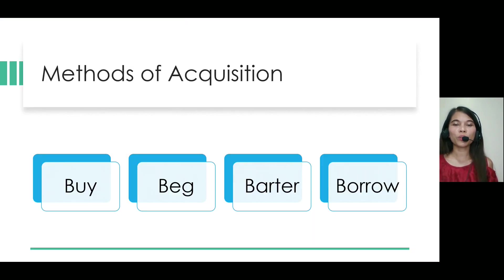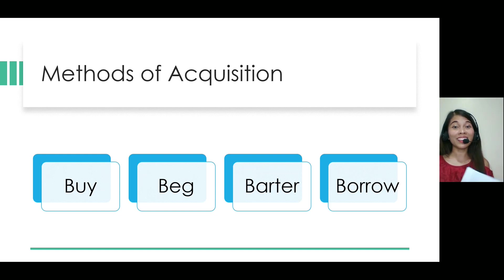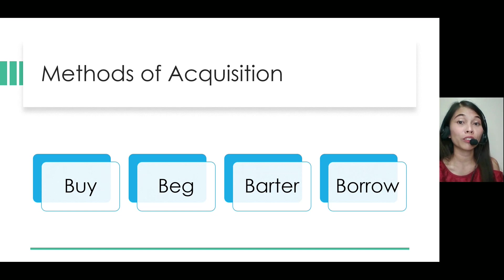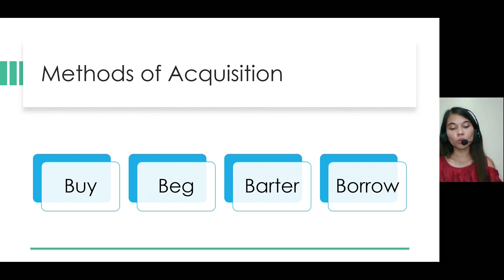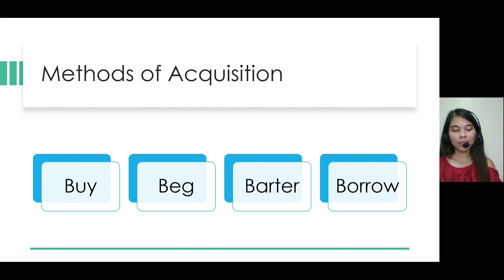Besides methods of ordering, we also have methods of acquisition: buy, beg, barter, or borrow. "Buy" means we purchase. "Beg" means we request that materials be given to us. "Barter" is like an exchange. "Beg" or gifts refers to materials given to the library from various local and foreign sources — individuals, institutions, foundations, friends of the library, alumni, and many more. Selection and acceptance criteria for gifts should be the same as those for purchased materials, and unwanted items must be disposed of. The library may also compromise with other libraries or organizations to exchange unwanted or duplicate materials.